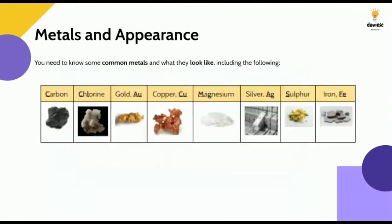The last thing you need to know is metals and appearance. So these are some common metals and these are what they look like. We've got carbon, chlorine, gold, copper, magnesium, silver, sulphur and iron. You need to know what they look like. However, this will not be highly tested.